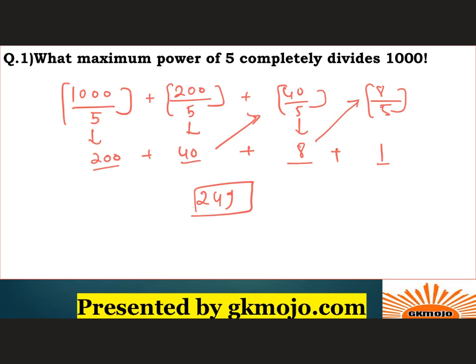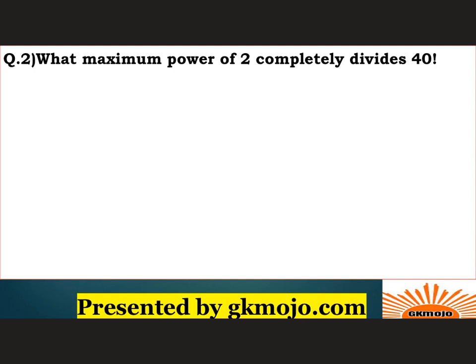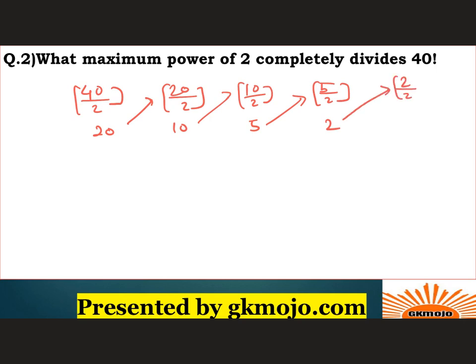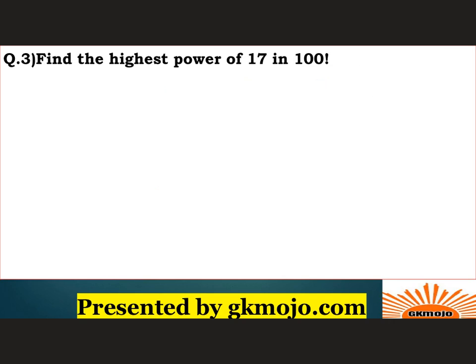I hope you have understood the technique. Let's see the next question which says what maximum power of 2 completely divides 40 factorial. So let's just take 40, divide by 2, we get 20. Take 20, divide by 2, we get 10. Divide 10 by 2, we get 5. Divide 5 by 2, quotient is 2. Divide 2 by 2, quotient is 1. We cannot further divide 1. So add them all: 20 plus 10 is 30, 35, 37, 38. So the maximum power of 2 which completely divides 40 factorial is 38.